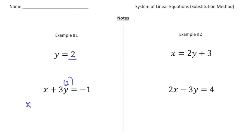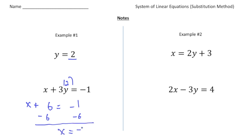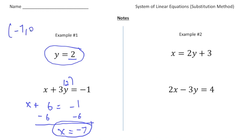So this is now going to be x plus 3 times 2 is 6, equals negative 1. Then I'm going to solve for x — take away 6 from both sides — which means x is going to equal negative 7. We already know that the y value is 2, so the solution to this problem is going to be negative 7 and 2. That's a real basic one.